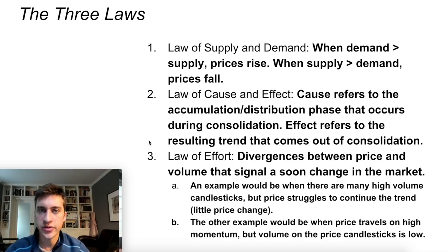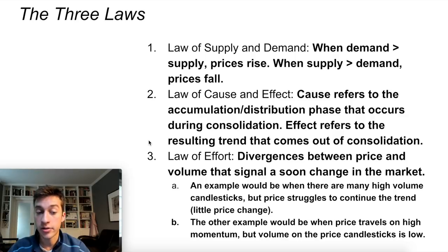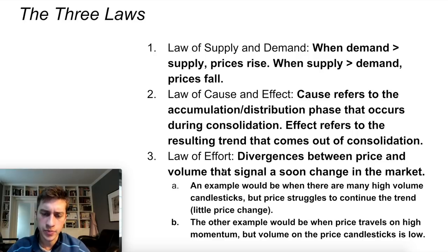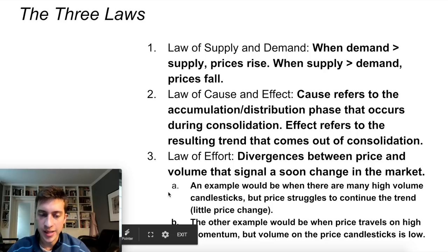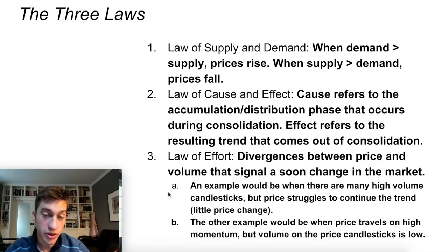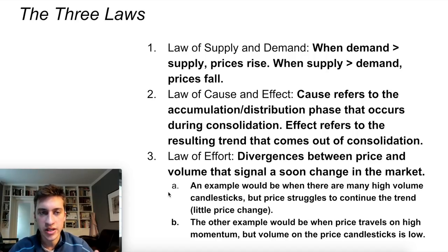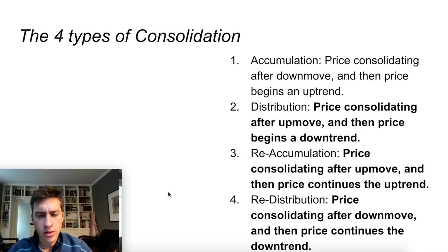Effort versus result looks at individual candlesticks and price moves, examining the price-volume pattern. If there's a lot of price movement but no volume, that's divergence - not a good sign. A small candlestick with a lot of volume is also not a good sign. These kinds of divergences can reveal potential reversals in the trend. We also talked about the four types of consolidation: accumulation, distribution, reaccumulation, and redistribution.